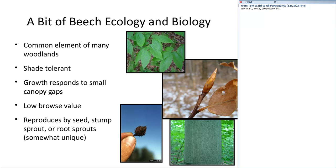Beech has low browse value, so deer typically do not eat beech trees. If deer are eating beech, there's probably not much else to eat. Because of that, the seedlings and sprouts are left intact. If there's a canopy gap, beech is already present in the understory and able to take advantage of that opening. That's why if you're cutting firewood or using single-tree selection harvesting and there's beech in the understory, that limited-scale disturbance is going to favor species like American beech.